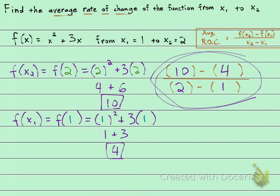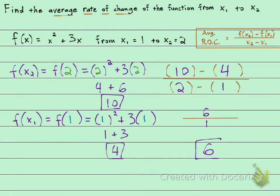And this is going to give us the average rate of change between those two points. So in the numerator, we have 10 minus 4, which is 6. In the denominator, we have 2 minus 1, which is 1. And 6 over 1 is 6.